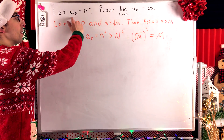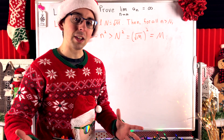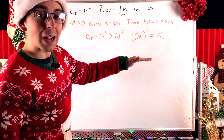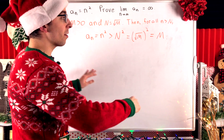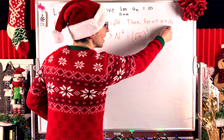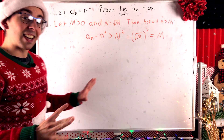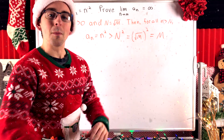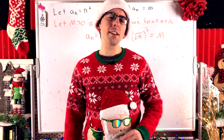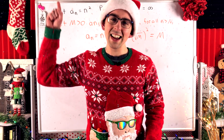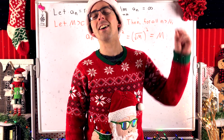So indeed, by definition, this sequence of squares of the natural numbers diverges to positive infinity. Given any positive number m, eventually our sequence passes that number and stays above it — and we know it stays above it because of the "for all": for all n after big N, the terms of our sequence are greater than m. That's a nice basic proof of diverging to positive infinity. Thank you very much for watching — I'll see you next time, and be sure to subscribe for the jolliest math lessons on the internet.